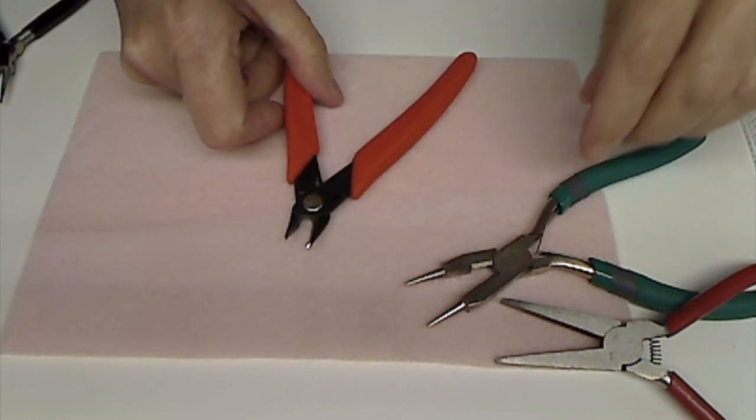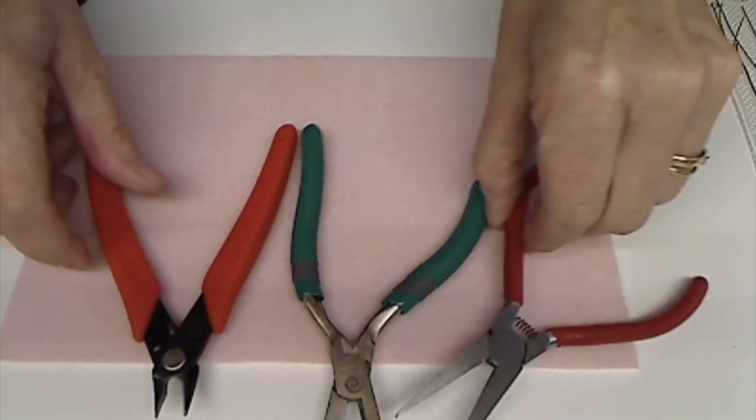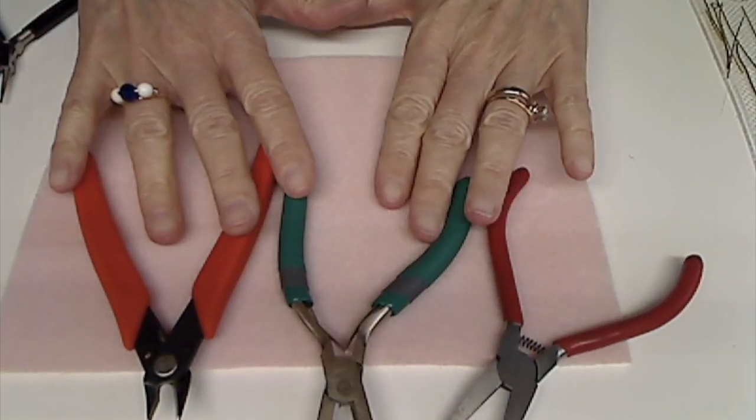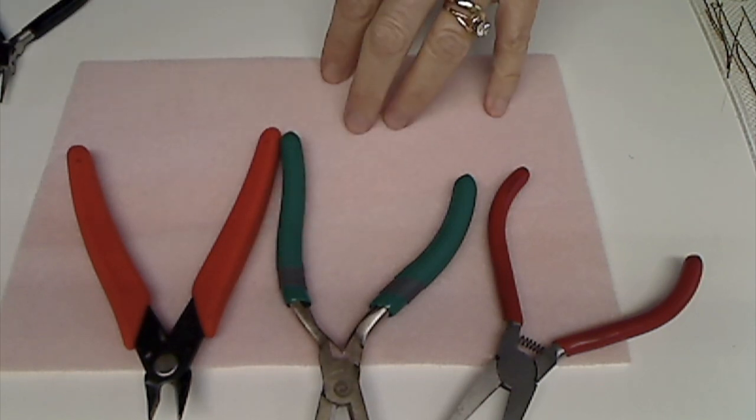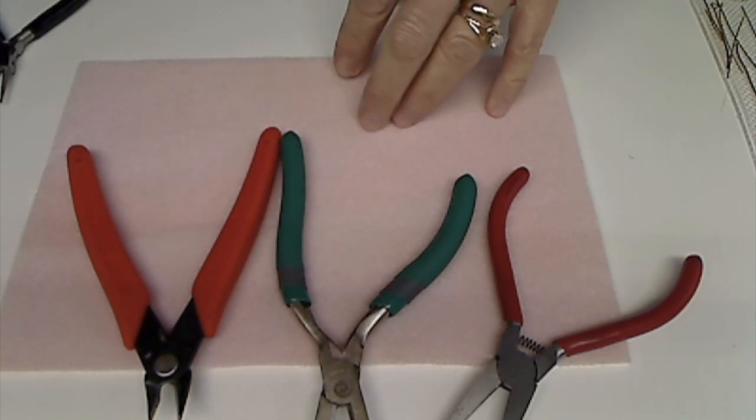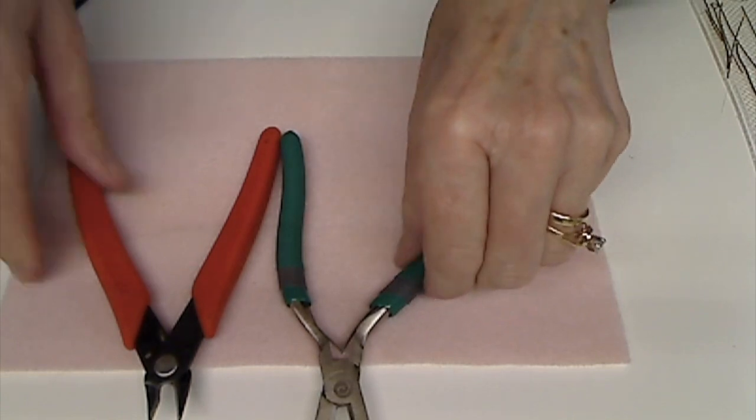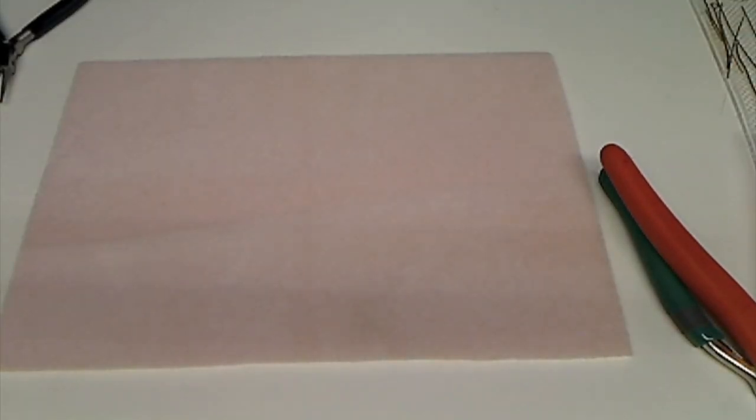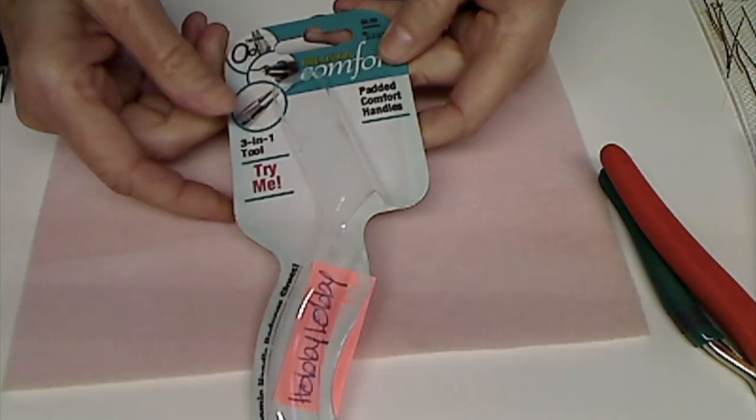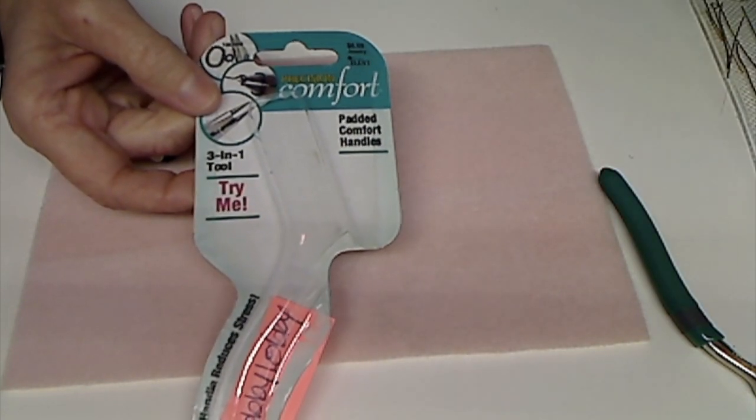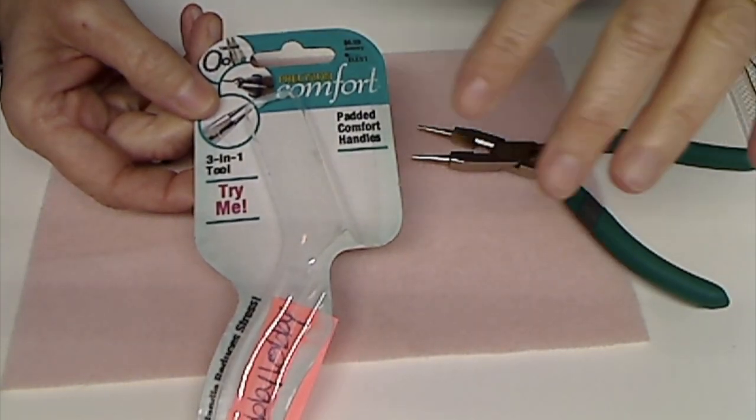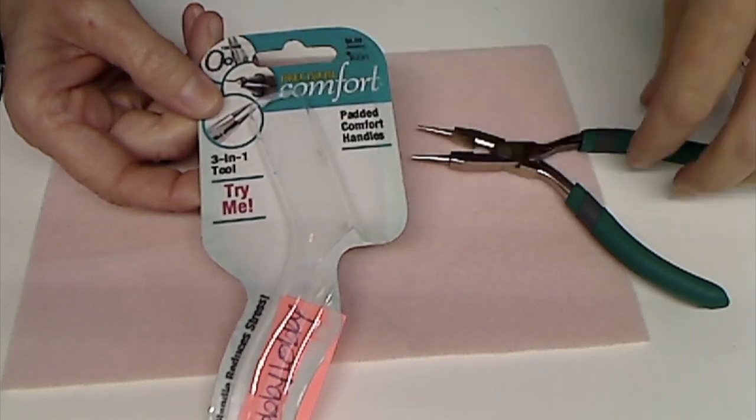So now your question probably is, where do you get these things? So these two came from Hobby Lobby. And I'm going to show you the package that they came in. And the writing is going to be all backwards. So it's going to be kind of hard to see what it says. So I will take some photographs and put that up on my website.